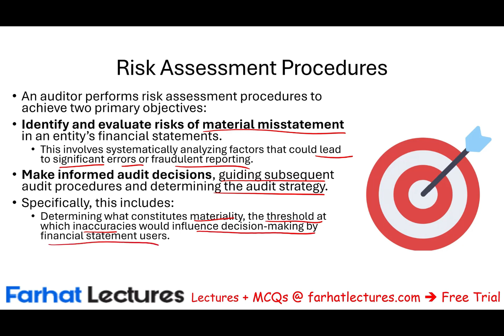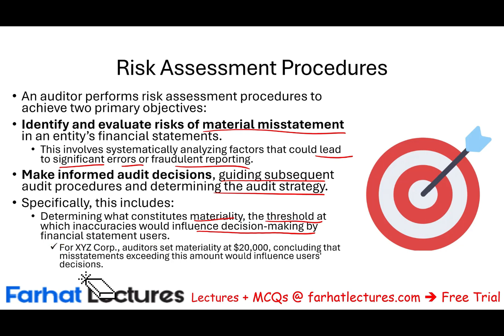So the first thing is: did you set up your materiality? That's part of the planning phase. For example, for XYZ Corporation we could set materiality at $20,000. That tells us any misstatement exceeding this amount would influence the user's decision. We're going to have several recordings about materiality — in this session we will cover an overview. One objective is to determine the materiality as part of the audit strategy.